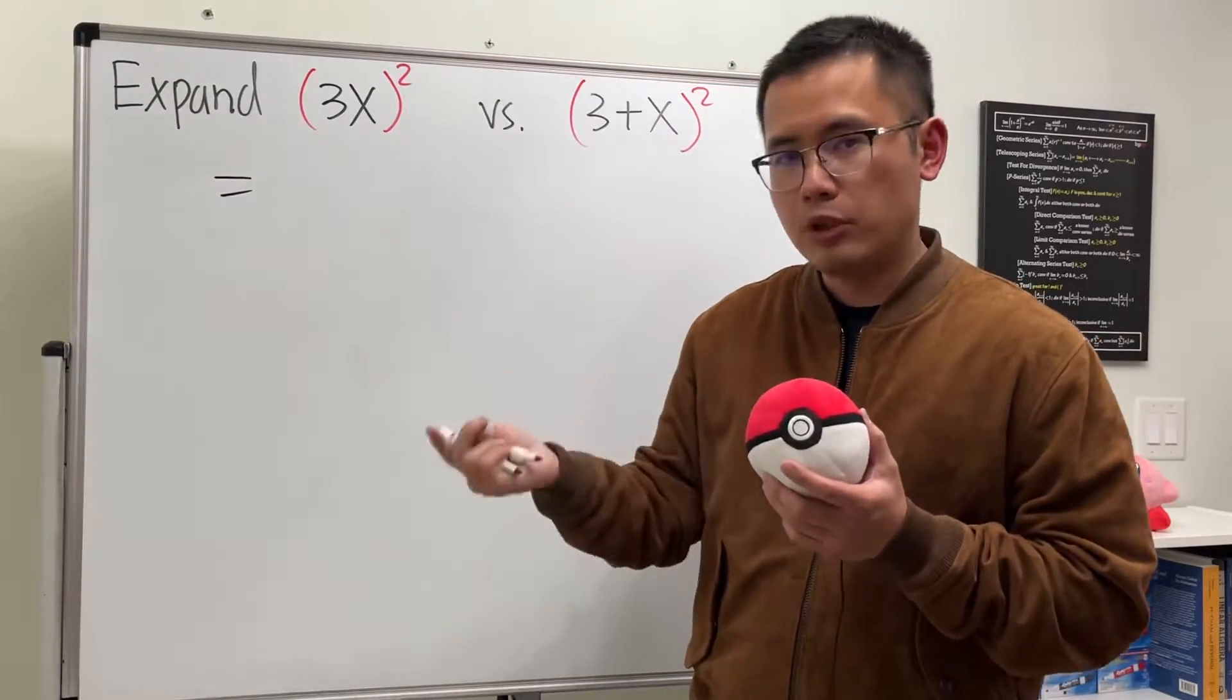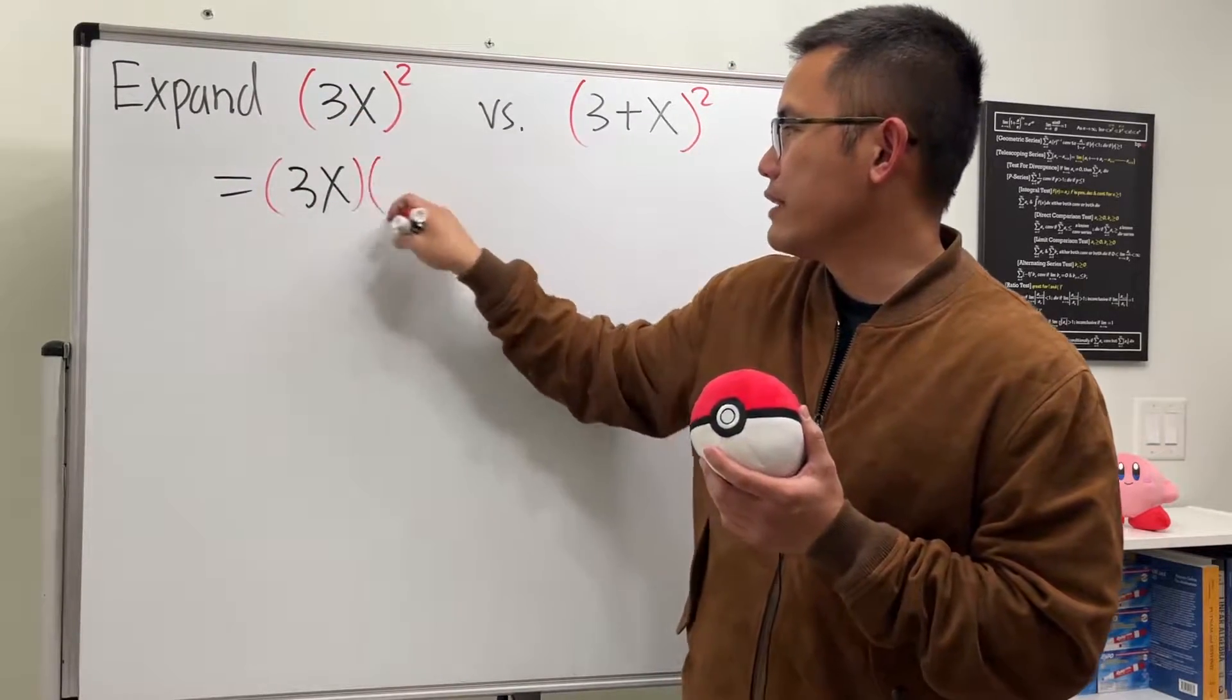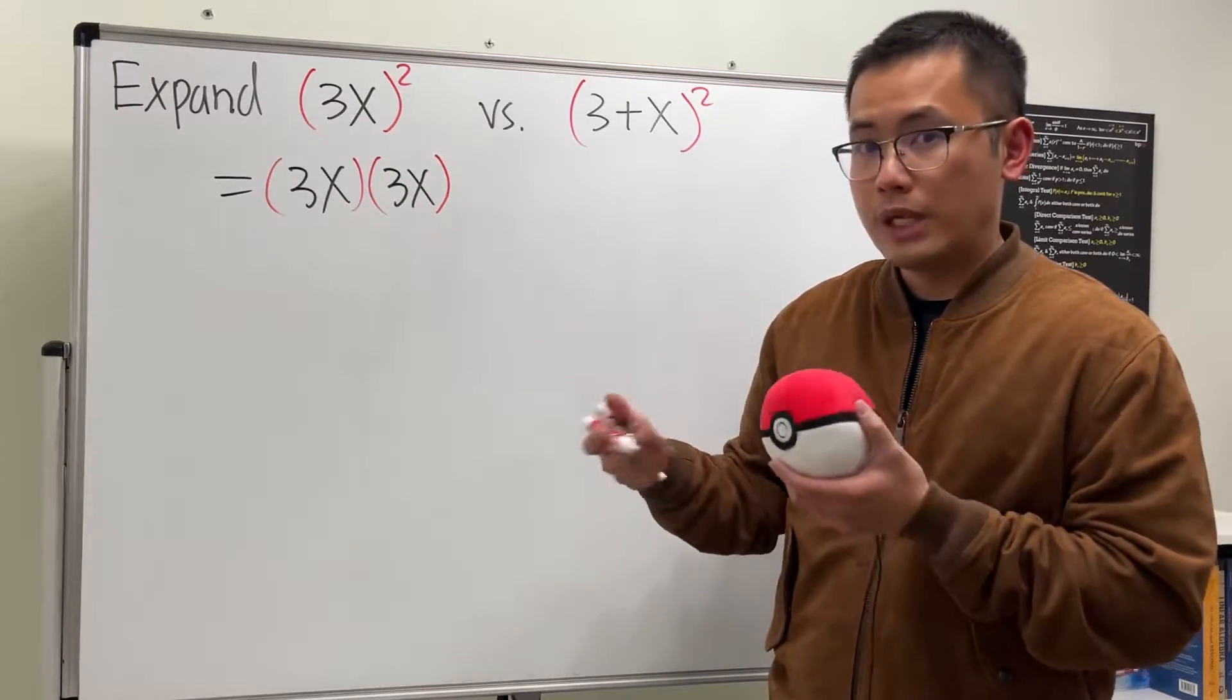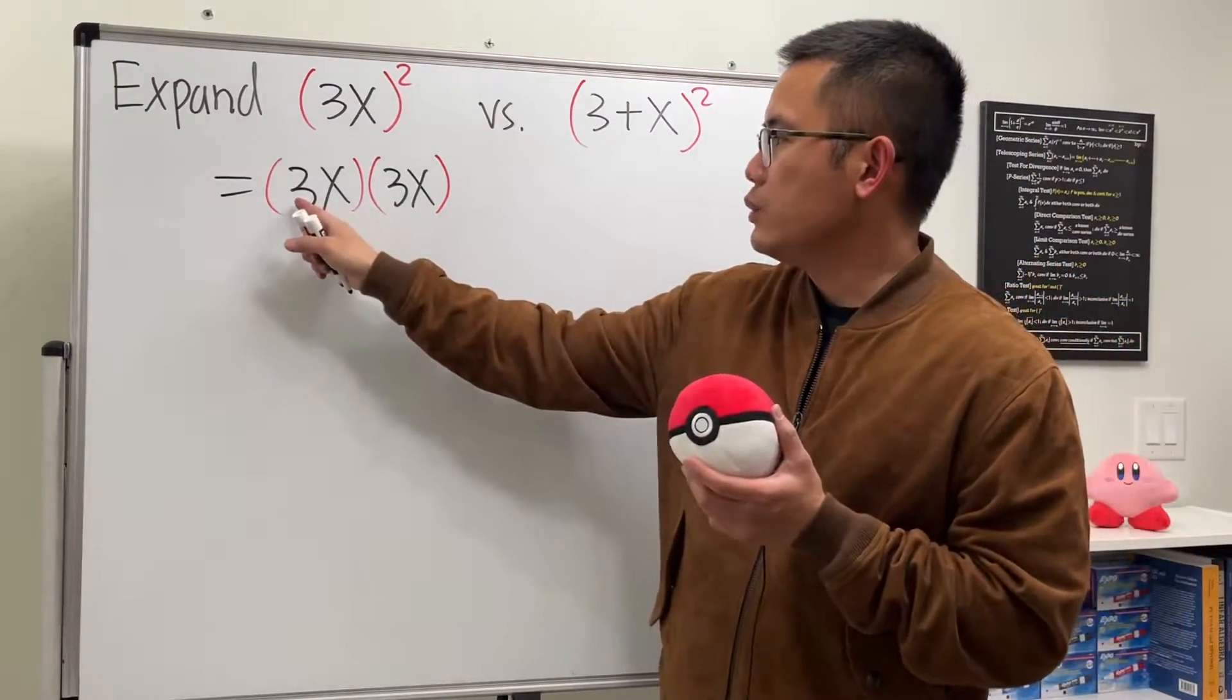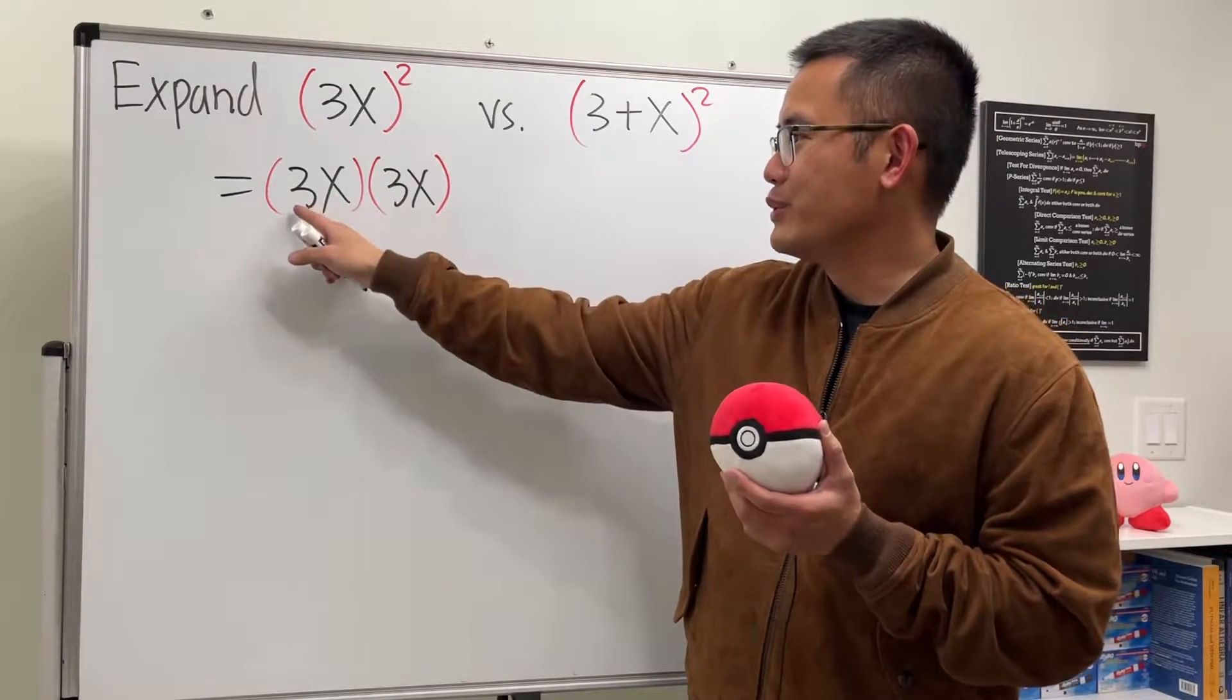So we get parentheses with 3x inside, and then another parentheses with 3x. We're going to multiply them out, and you see we just have 3 times x times 3 times x. The thing is, we can do 3 times 3 first, which is just 9.